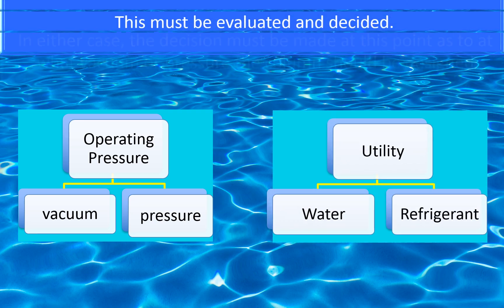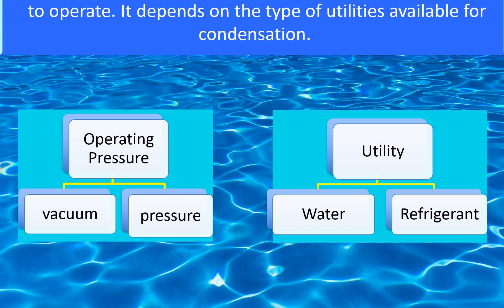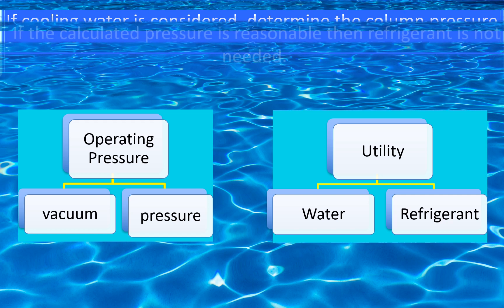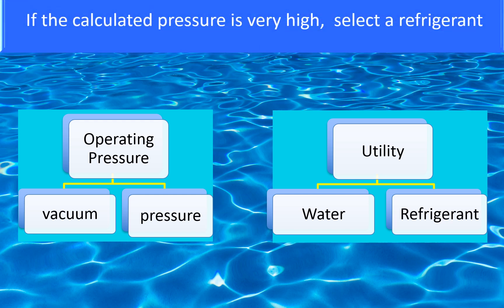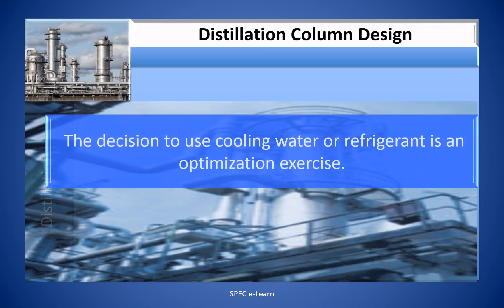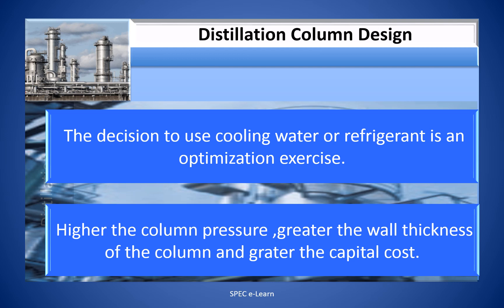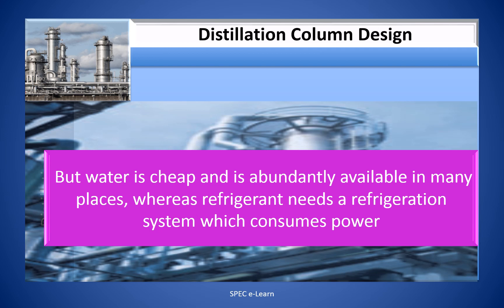This must be evaluated and decided. In either case, the decision must be made as to what vacuum or pressure the column should be designed to operate at — it depends on the type of utilities available for condensation. If cooling water is considered, determine the column pressure; if the calculated pressure is reasonable, refrigerant is not needed; if the calculated pressure is very high, select a refrigerant. The decision to use cooling water or refrigerant is an optimization exercise. Higher column pressure means greater wall thickness and greater capital cost, but water is cheap and abundantly available, whereas refrigerant needs a refrigerant system which consumes power.